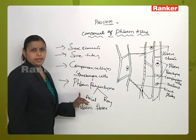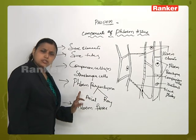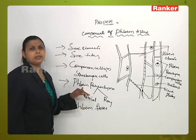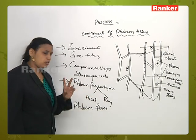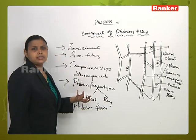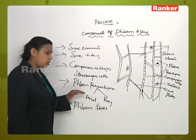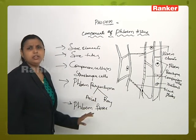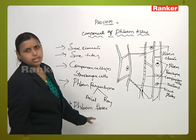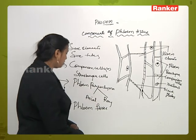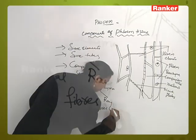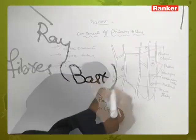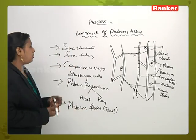Next is phloem parenchyma. Similar to xylem parenchyma, phloem parenchyma is again of two types: axial parenchyma and ray parenchyma. And similar to xylem fibers, we also have phloem fibers, which are also called bast fibers.